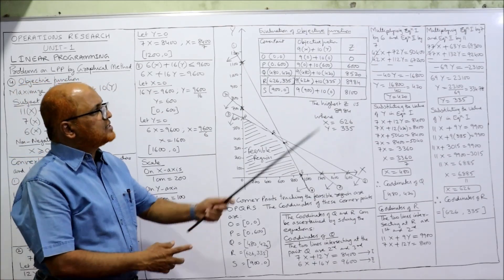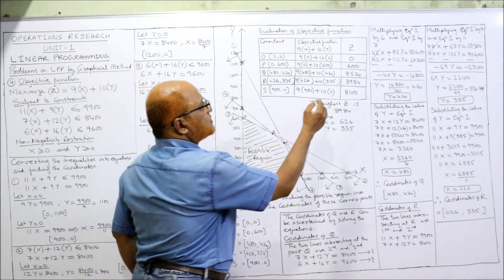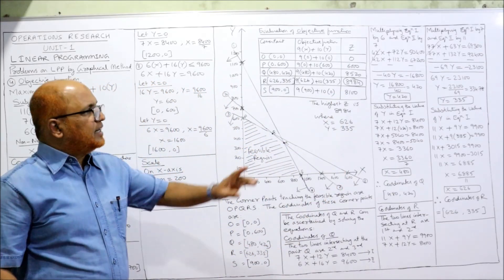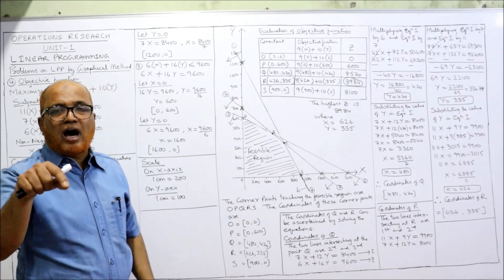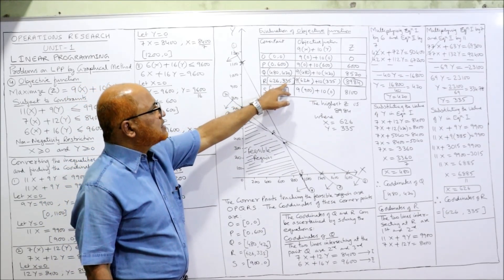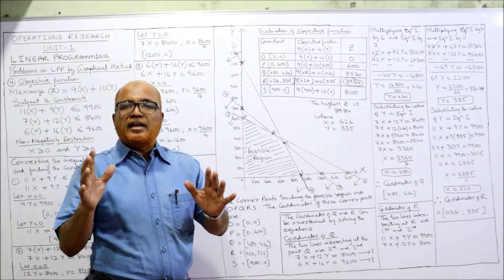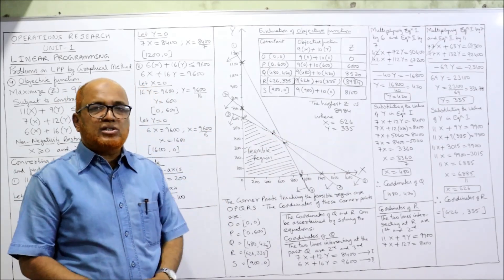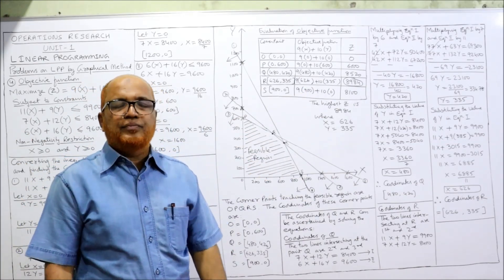Now find which value of Z is the highest. The highest value of Z is 8984, achieved at corner point R, where x = 626 and y = 335. So the final answer is: x = 626, y = 335, and maximum Z = 8984.